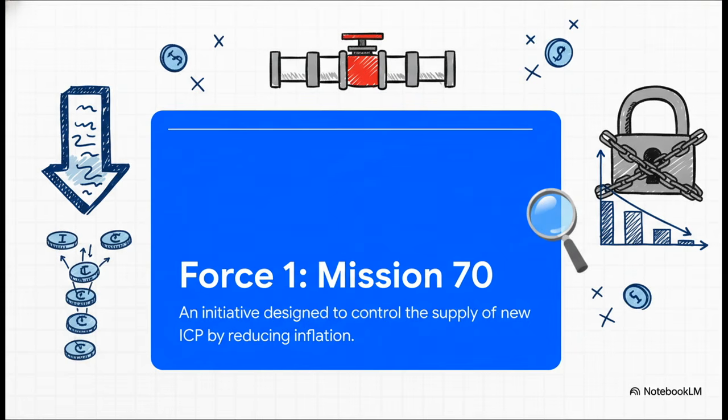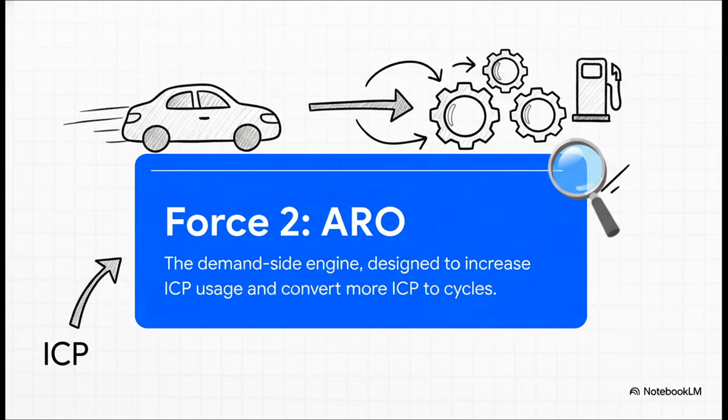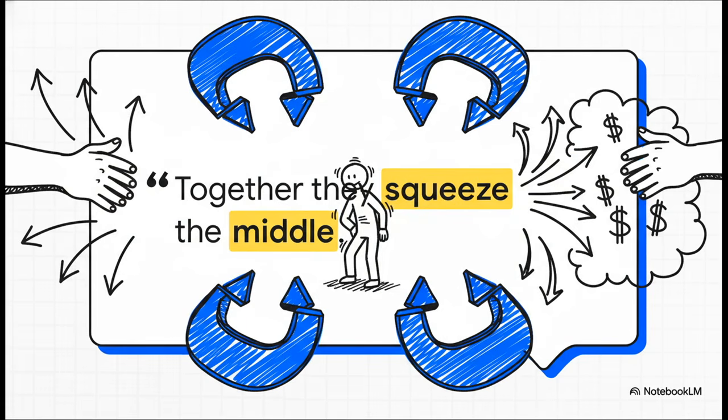So the first force at play here is something called Mission 70, and its entire purpose is to control the supply side of the equation. It's designed to reduce the rate at which new ICP is created. It's all about tightening that supply. And then you have the second force, and that's ARO itself. ARO is the demand side engine. It's designed to dramatically crank up the demand for ICP by driving that real-world usage, getting more cars on the road, which means more ICP has to be converted into cycles, into gas, to power everything. So what happens when you're controlling supply with one hand, and you're cranking up demand with the other? The source puts it perfectly: Together, they squeeze the middle.